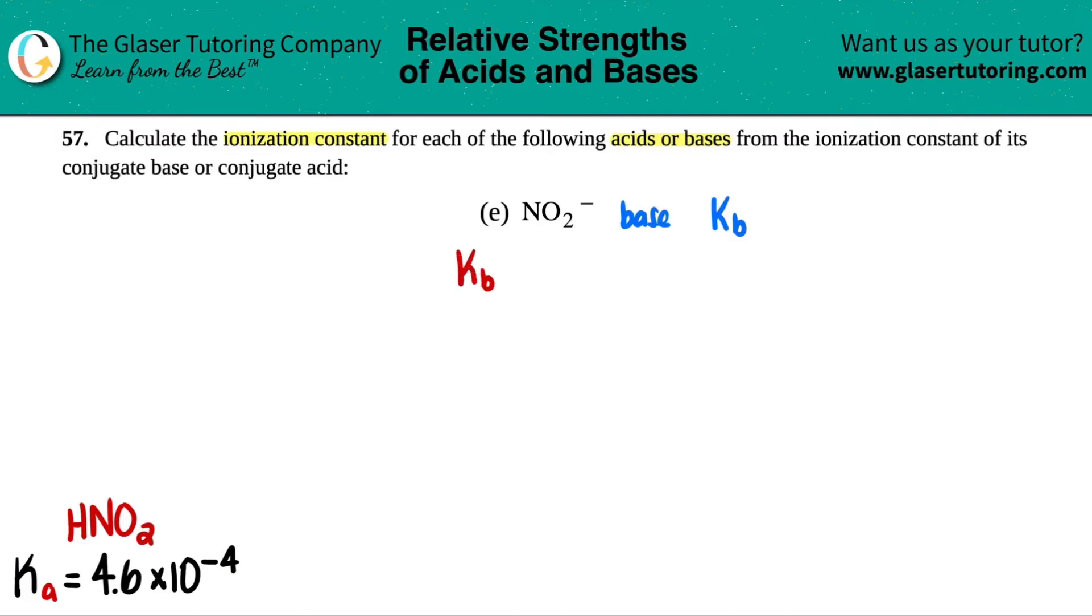So ideally, all we got to do is just convert the Ka value to the Kb, which is what we want. Formula that comes to mind, there's only one of them that you can convert Ka to Kb and that's this formula right here. It's the Kw formula. Kw equals Ka times Kb.